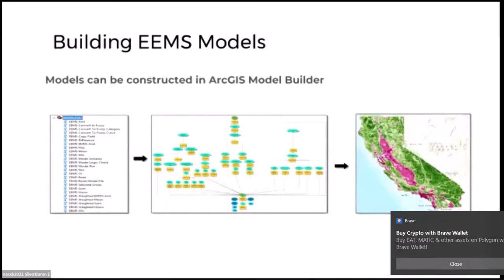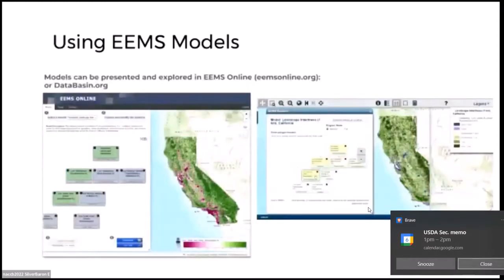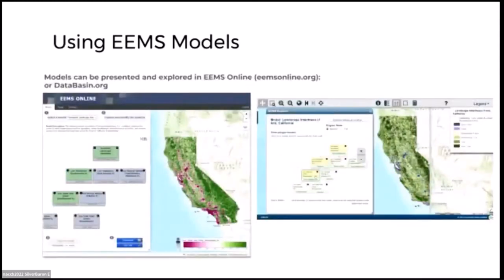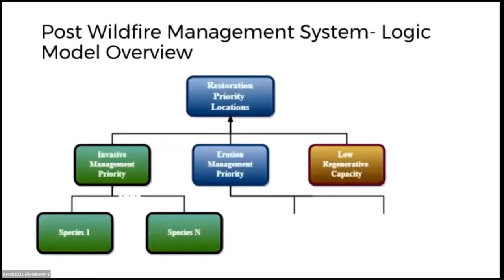When building EAMS models you can do it in ArcGIS Model Builder or in command line, then upload it either into EAMS Online — which is an app designed specifically for viewing — or into DataBasin, which has a pop-up viewer for that graphical user interface. I'll show you those demonstrations in a minute.